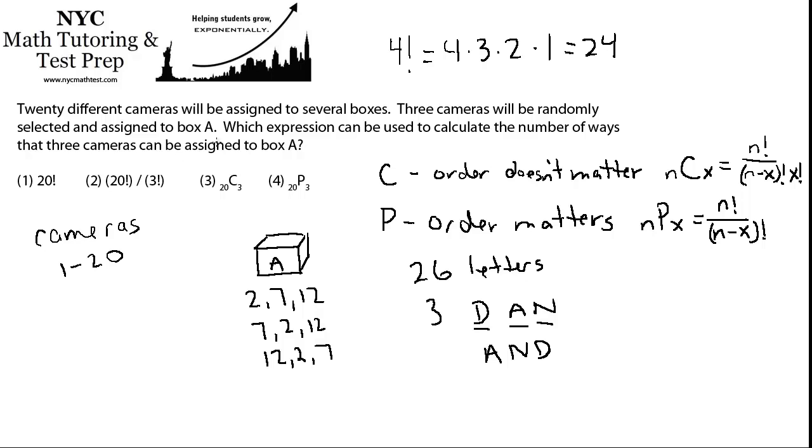Let's get back to this problem. They want to know the number of ways that three cameras can be assigned to box A. Clearly, we don't care if it's 272 or 7212 or 1227. These are all the same combination. So, we're going to use 20C3. And that's the answer.